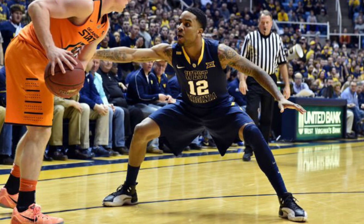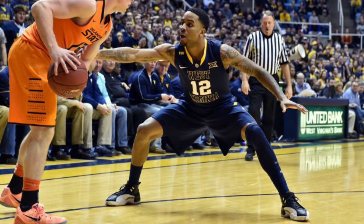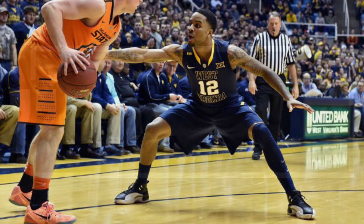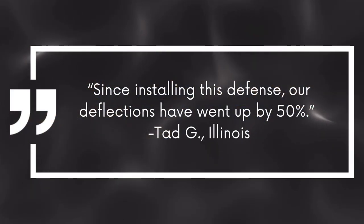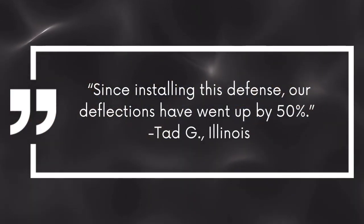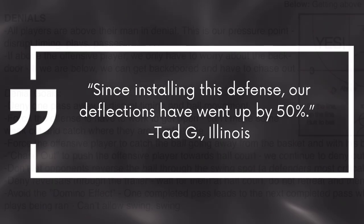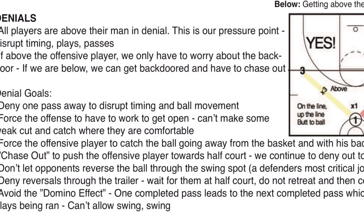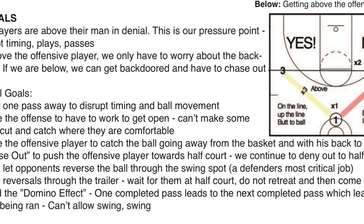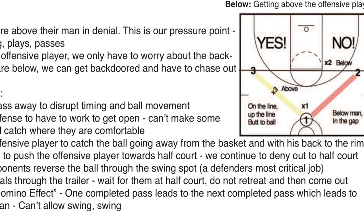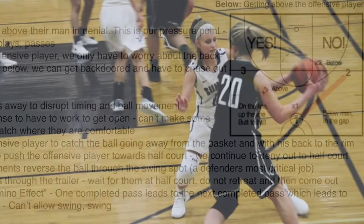Deny one pass away and help from the weak side — no strong side catch-and-shoot threes. The mentality of Deny and Disrupt is: you are not going to run your offense and complete these passes. You'll be able to move when the ball moves, and there's always a corresponding action to a dribble or pass. One of the main skills in this system is to scramble and recover to neutral. There will be a lot of scramble situations because teams will abandon their offense and drive the ball.